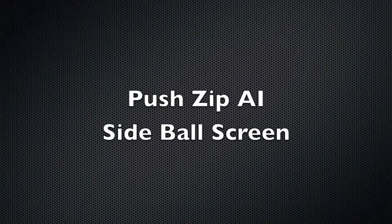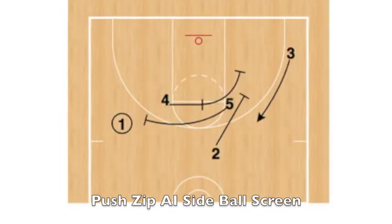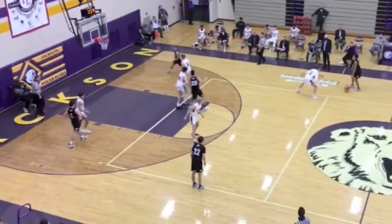What's up internet basketball junkies. Today we are going to look at a series of plays that all start out of the same player movement pattern. This helps disguise the actions to make it more difficult for teams to be prepared to stop the actions with adjustments.